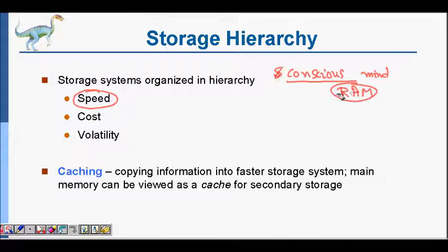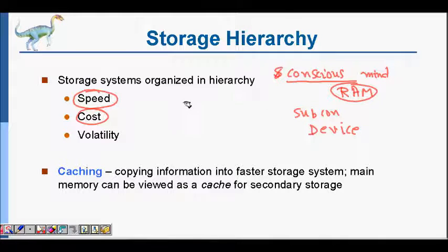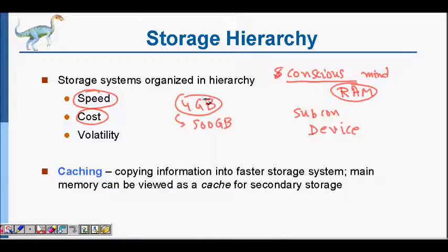Then you have your subconscious mind, which is like your hard disk — a huge reservoir of storage, but access is not as fast. The speed is fast for RAM but the cost is higher and it is a smaller device. A 4 GB RAM will be much costlier than a 500 GB hard disk. RAM is also volatile — when switched off, it doesn't store anything.